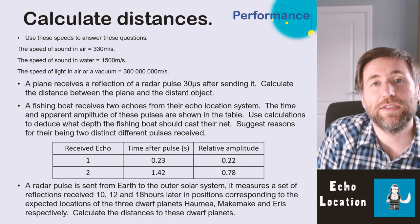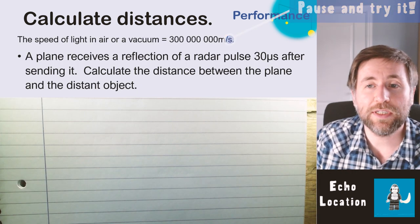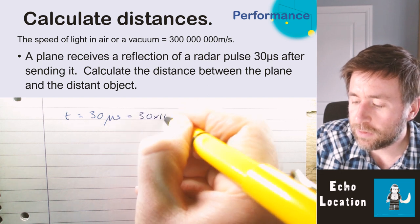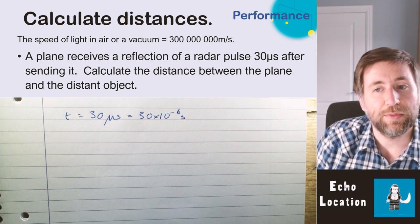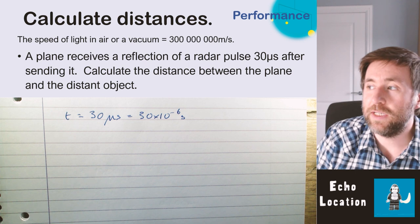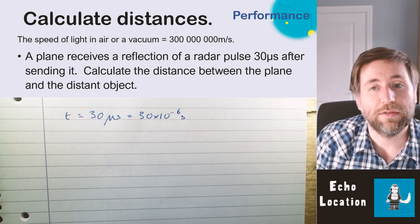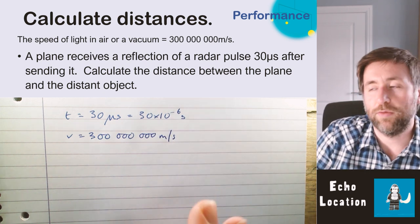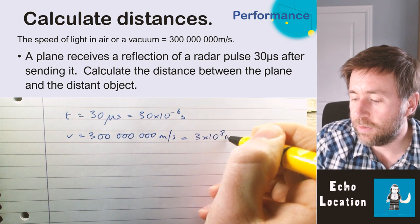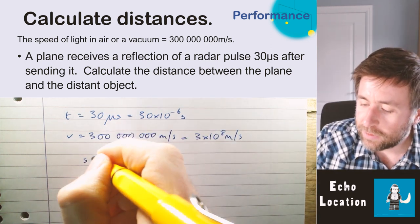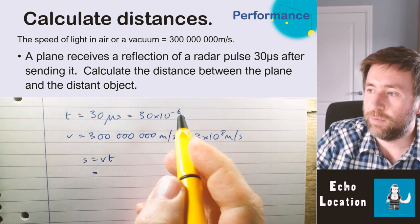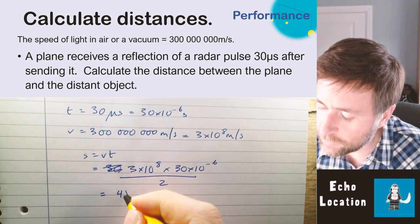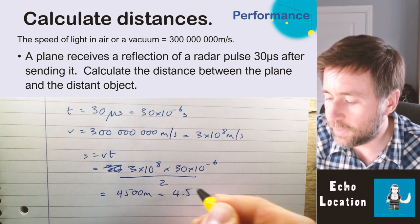A plane receives a reflection of a radar pulse 30 microseconds after sending it. That's 30 × 10⁻⁶ seconds. This is a radar pulse using radio waves, so we use the speed of light: 3 × 10⁸ m/s. Using distance = speed × time: 3 × 10⁸ × 30 × 10⁻⁶ divided by 2 gives 4,500 meters — four and a half kilometers, a sensible distance for aircraft radar.